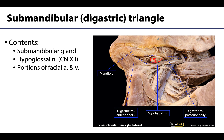Additionally, portions of the hypoglossal nerve, as well as the facial artery, which you can see a little bit right here, and facial vein will be located within this triangle.